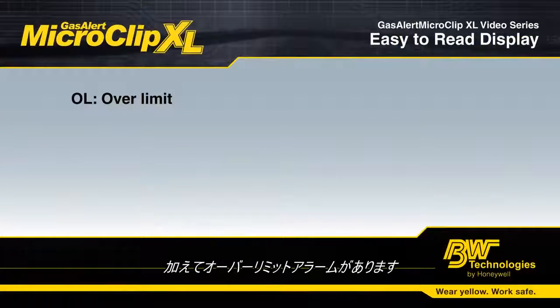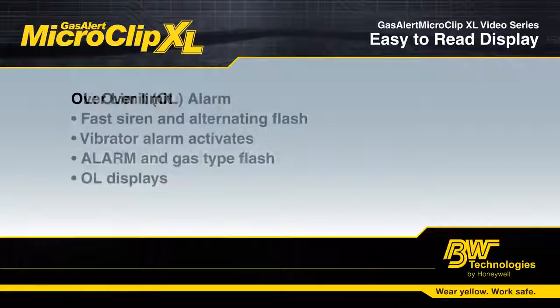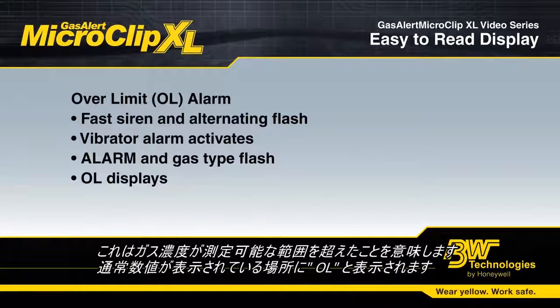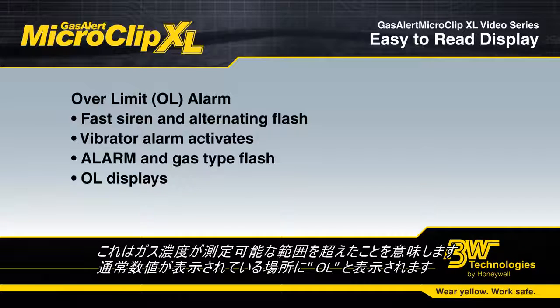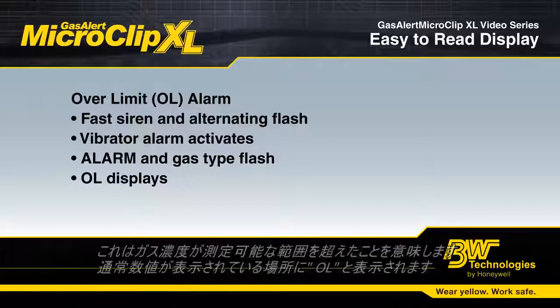The fifth type of alarm is an OL, or Over Limit Alarm. This means that the level of gas in the environment is beyond what the sensor can measure. OL will flash in place of the reading of that sensor.